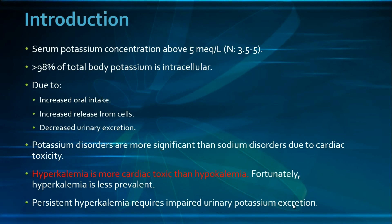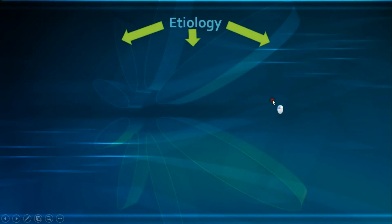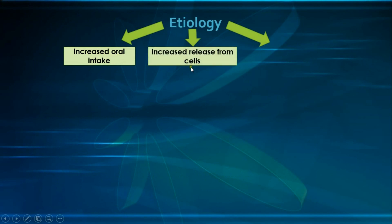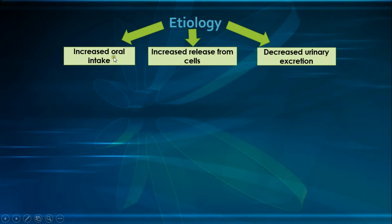Now let's move to the etiology of hyperkalemia. We have three main categories: the first is increased oral intake of potassium, the second is increased release from the cells, and the third is decreased urinary excretion. Starting with increased oral intake — although it is uncommon to have an isolated increased intake cause hyperkalemia, it is usually superimposed on another mechanism, such as increased release or decreased excretion of potassium.